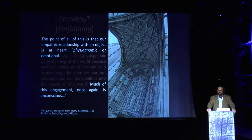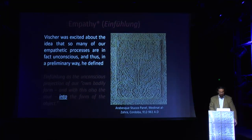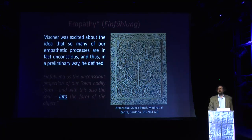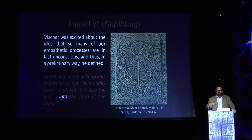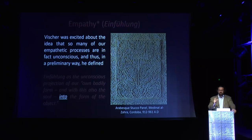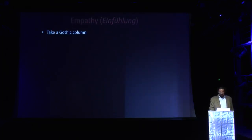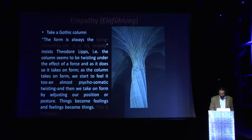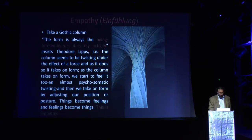This happens at an unconscious level — we're not always aware of it. His preliminary definition is: 'Empathy is the unconscious projection of our own bodily form and with this also the soul into the form of the object.' He suggested we empathize by projecting ourselves into — not onto — something. 'Onto' is when I project my own anger onto you; projecting 'into' something suggests an encounter where the other elicits my empathetic response — a two-way street. The line invites and elicits my response.